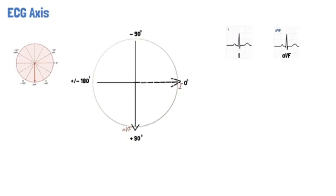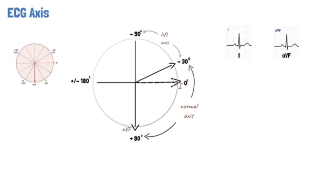The QRS axis can be placed in one of those quadrants. The normal QRS axis is between minus 30 to plus 90 degrees. Left axis deviation is said to be present if the major QRS vector is between minus 30 and minus 90 degrees.